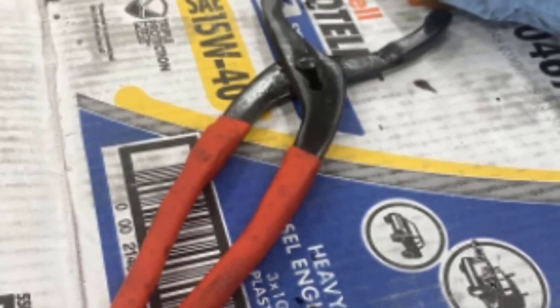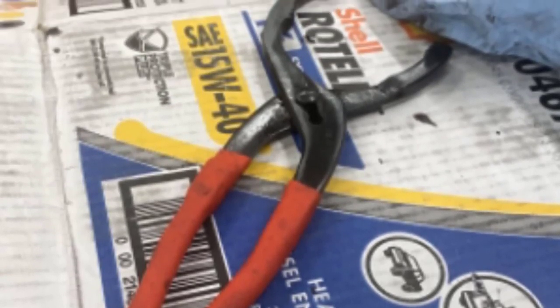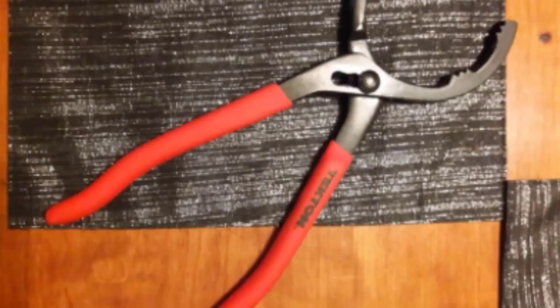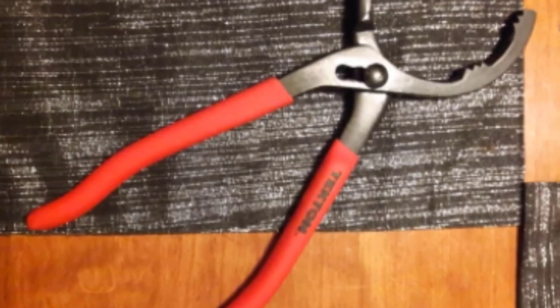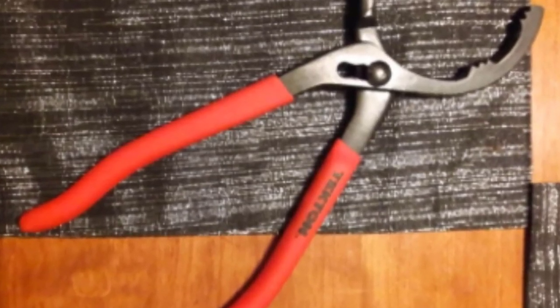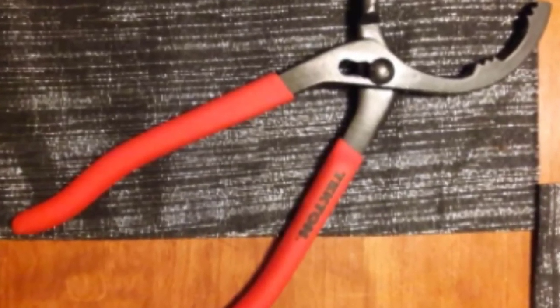The biggest complaint is that the pliers can distort and puncture the filter because it can be hard to turn the pliers without crimping the filter. The oil may leak and you may need to remove the filter in pieces. It may also be challenging to get these pliers to work if the filter is recessed.